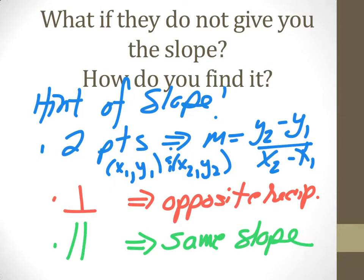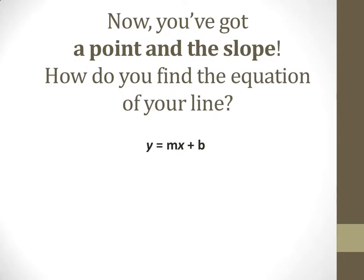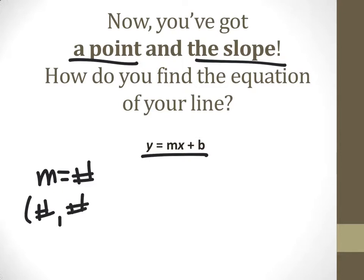Let's do an example of those last two. So how do we do this? You have a point and you have the slope, so you're going to use this equation. You're going to have m equals some number and you're going to have a point x, y. You're going to substitute those values in here, and then you're going to find the b. Once you have that, you have your equation.